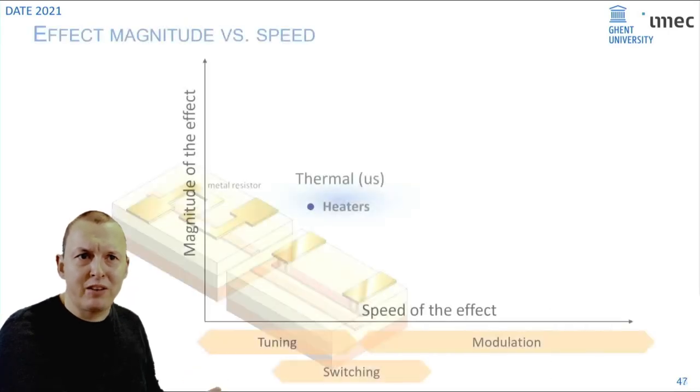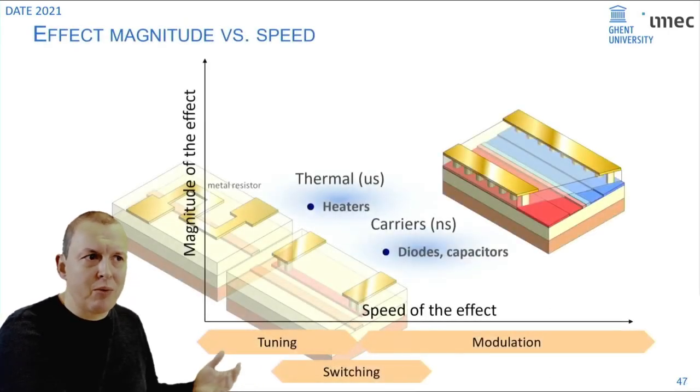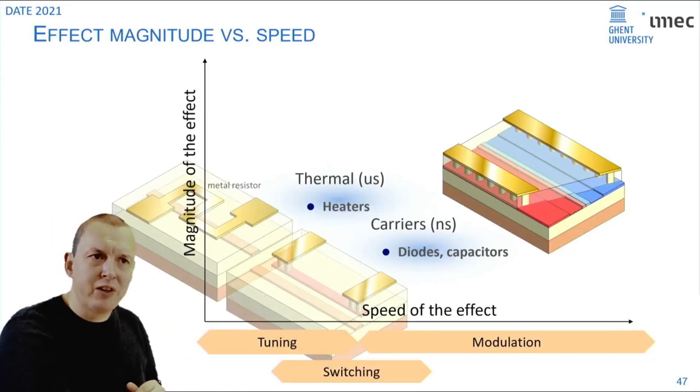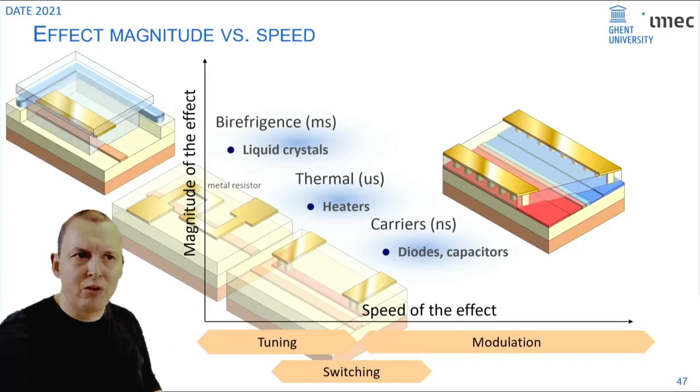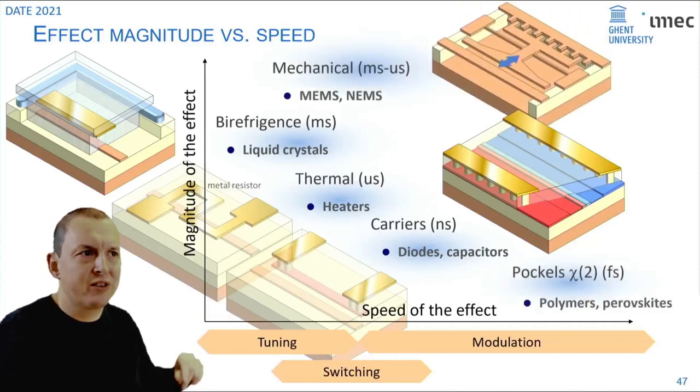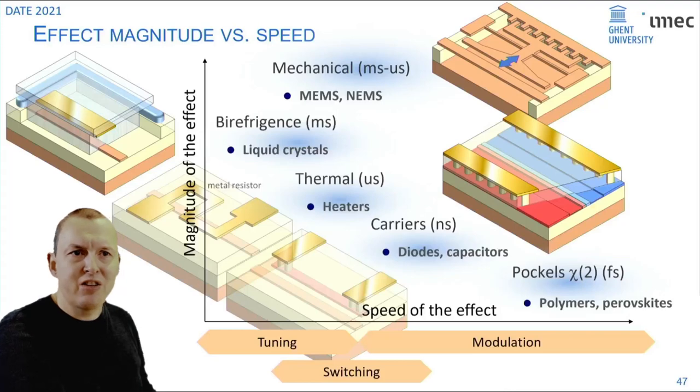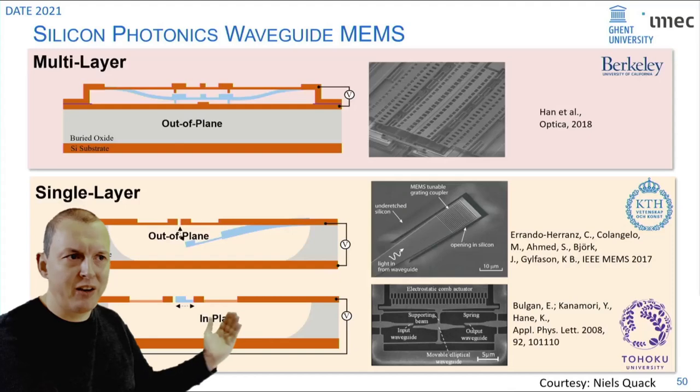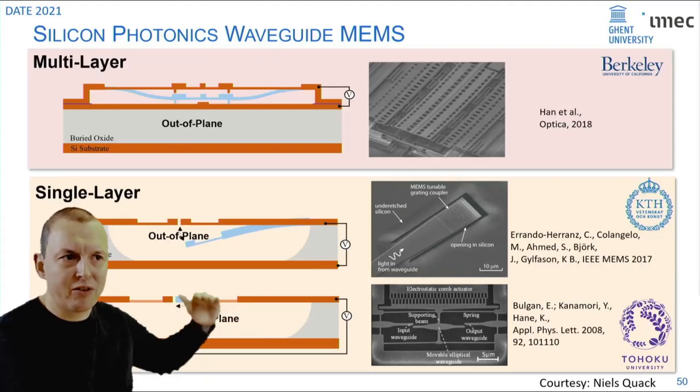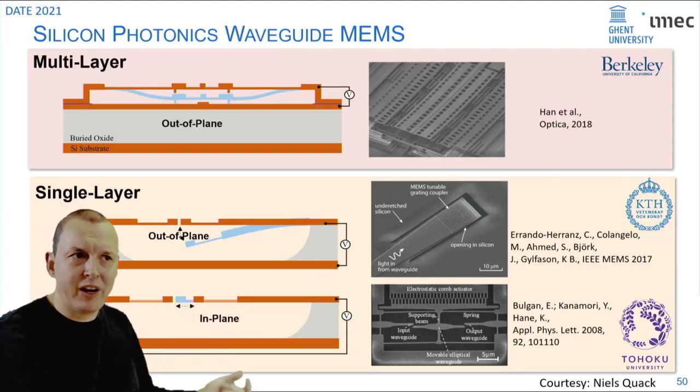There's a number of ways to implement that. People have been looking at carriers in silicon photonics but these are usually not very efficient and they also induce loss. You can use liquid crystals which is a technique we've been using at our university in Ghent. Or you can use micro electromechanical systems moving the waveguides around. That's actually a very attractive proposition because it's a very strong effect. You can move your waveguides in plane horizontally or out of plane vertically, and this way change the coupling and the effective index of the waveguides.